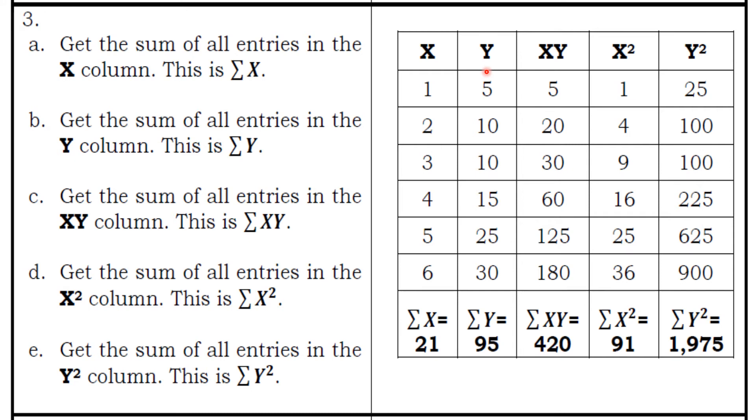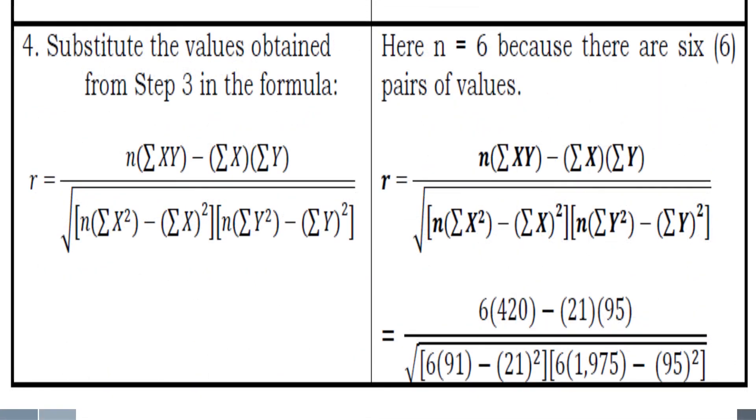We have to sum up the entries on the first to 6th row. So, 1 to 6 is 21, the sum of y is 95, the sum of xy is 420, the sum of x squared is 91, and the last one is 1,975. We are now ready to plug it in our formula.